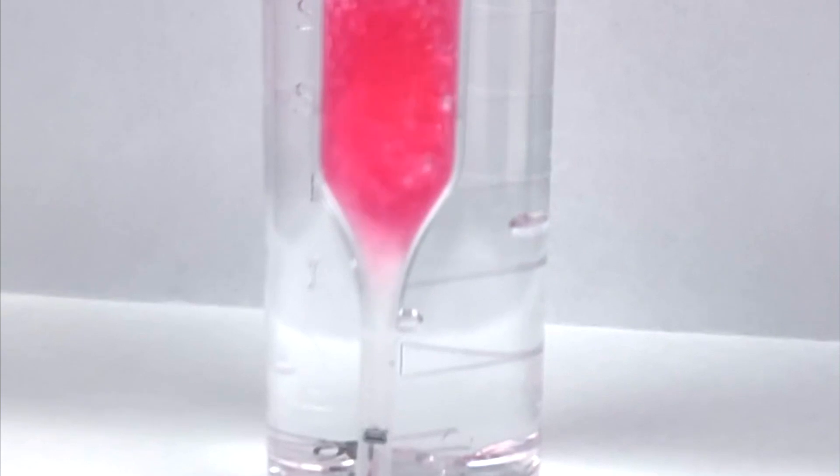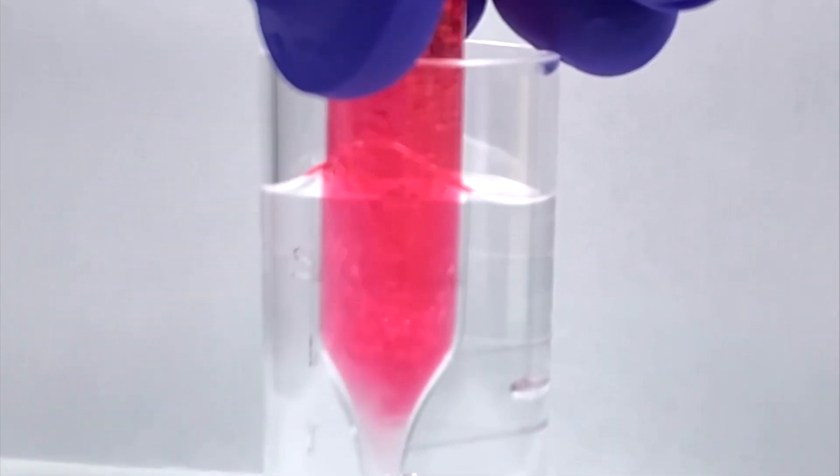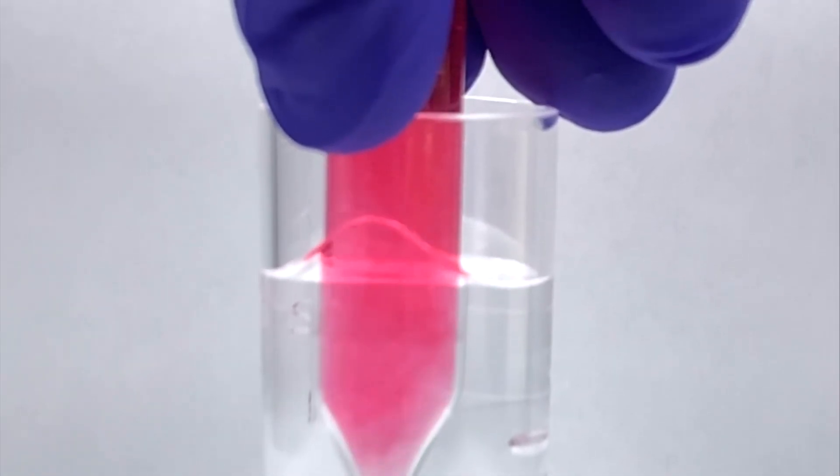Immediately after the snap, the vacuum sealed ampoule will draw in the precise amount of sample that's needed to mix with the pre-measured chemical reagents within.